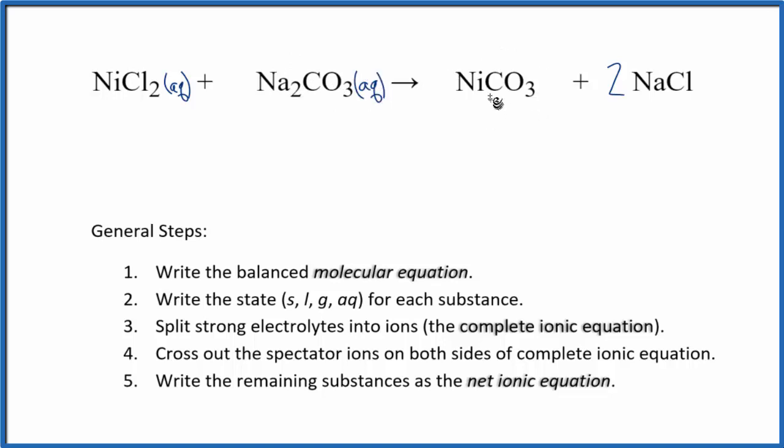Carbonates are usually not soluble except for group 1 metals. Nickel is not a group 1 metal—it's a transition metal—so this is going to be a solid. That means it's going to precipitate out, fall to the bottom of the test tube, and it'll be a solid in our net ionic equation.